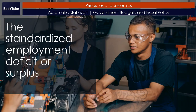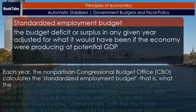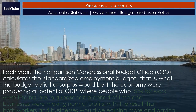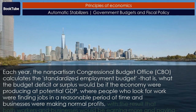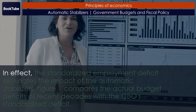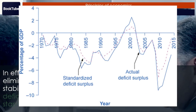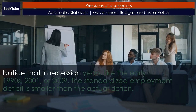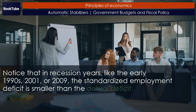The Standardized Employment Deficit or Surplus: Each year, the nonpartisan Congressional Budget Office (CBO) calculates the standardized employment budget — that is, what the budget deficit or surplus would be if the economy were producing at potential GDP, where people who look for work were finding jobs in a reasonable period of time and businesses were making normal profits, with the result that both workers and businesses would be earning more and paying more taxes. In effect, the standardized employment deficit eliminates the impact of the automatic stabilizers. Figure 1 compares the actual budget deficits of recent decades with the CBO standardized deficit. Notice that in recession years, like the early 1990s, 2001, or 2009, the standardized employment deficit is smaller than the actual deficit.